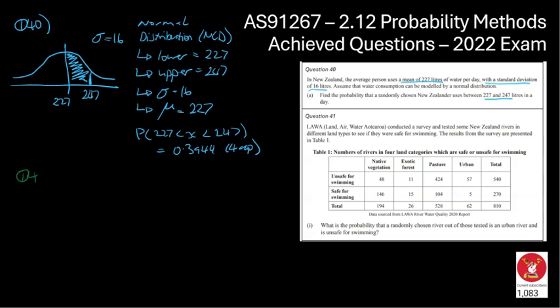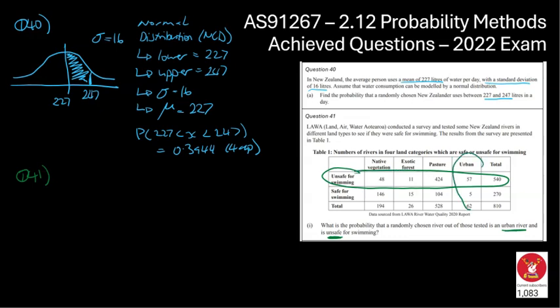We're now moving on to question number 41. We've got a whole bunch of information here. The question asks us: what is the probability that a randomly chosen river is tested as an urban river and it's unsafe for swimming? Looking at our table, we can see the unsafe ones are here, the urban ones are here, and the crossover — that 57 in the middle — that's the group that's unsafe and urban. The total number of rivers investigated in this survey was 810.